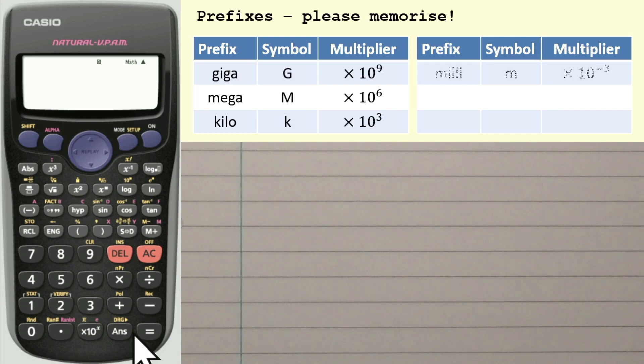For the other three, we have Milli, which is written as a small lowercase m, which is times 10 to the minus 3. We have Micro, which is written, this is a Greek letter, mu, and that represents times 10 to the power of negative 6. And then we have Nano, and that's a lowercase n, and that represents times 10 to the negative 9.